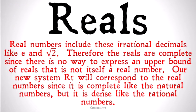Real numbers include irrational decimals like e, the square root of 2, and pi. Therefore, the reals are complete, because they aren't going to have the cuts or gaps — since there's no way to express an upper bound of reals that is not itself a real number. Our new system, RT, will correspond to the real numbers, since it is complete like the natural numbers, but it is dense like the rational numbers.